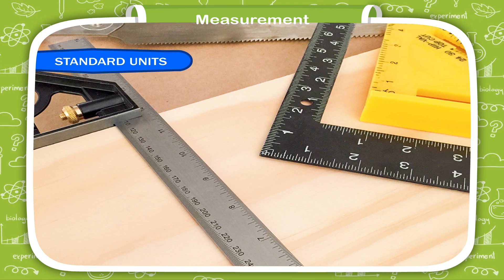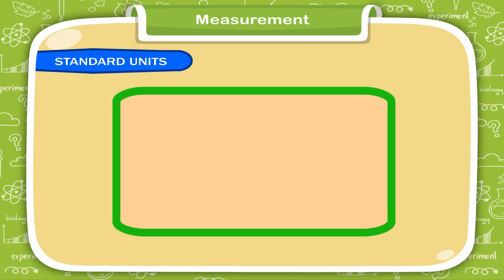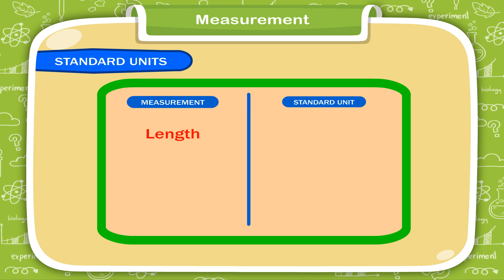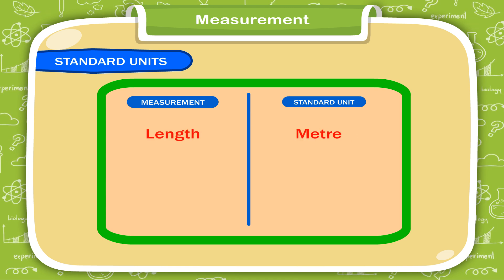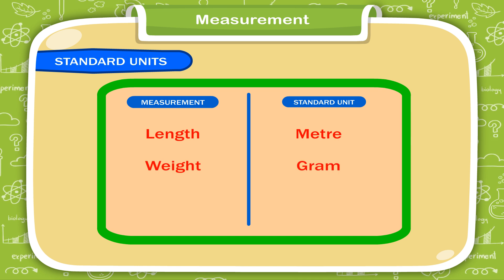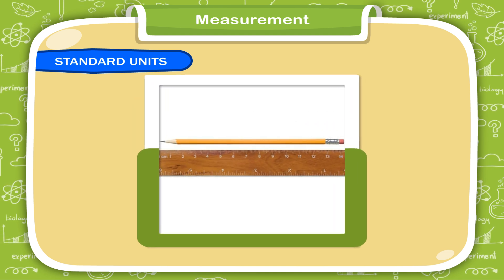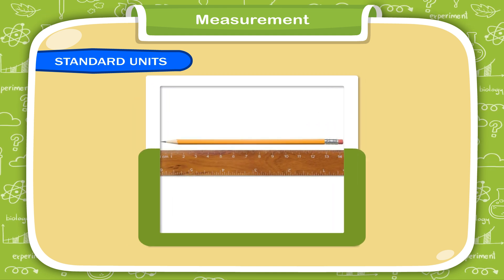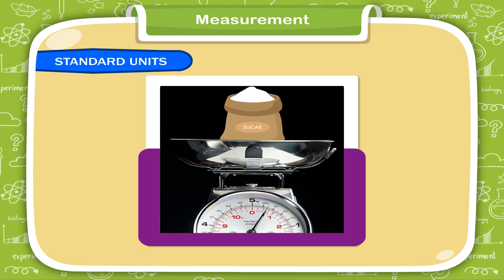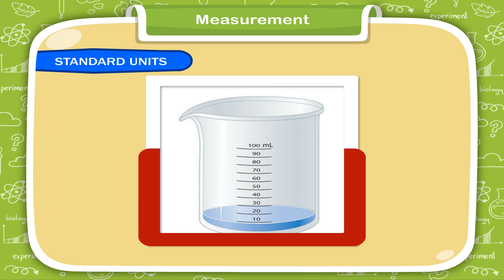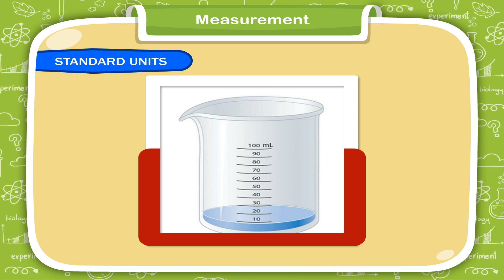This is why hand span and foot span cannot give us fixed measurements. To measure things, we need standard units. A standard unit is a fixed unit. We can measure the length of a pencil in centimetres using a ruler, the weight of a bag of sugar in kilograms using weighing scales, and the volume of some water in litres using a measuring jug.